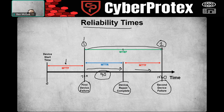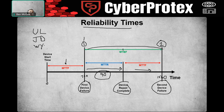You may have heard of the Underwriters Laboratory — UL — which is on many electronic devices. Additionally, JD Power and Associates, and here in Huntsville there's Wiley Casts for military equipment. These three entities do a lion's share of testing on reliability times for a bunch of different vendors. That's important to think about when looking into equipment reliability for your organization.